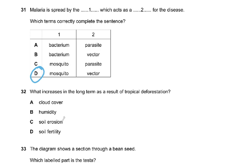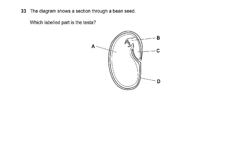Question number 32: what increases in the long term as a result of tropical deforestation? When you cut down trees, cloud cover decreases due to less transpiration and less humidity. What increases is soil erosion. Soil fertility is less directly related to deforestation. So that's going to result in soil erosion — a very easy and direct question, either you know it or you don't.